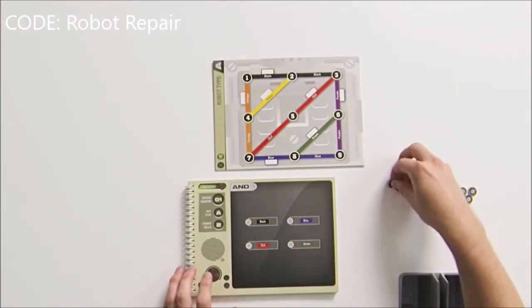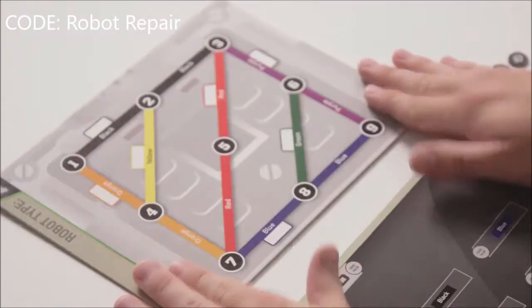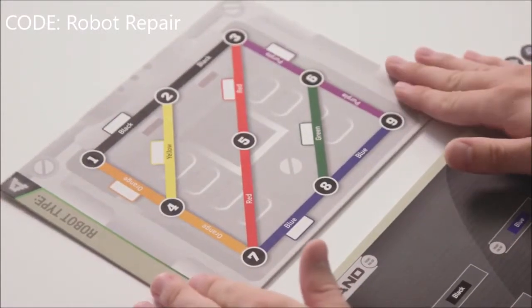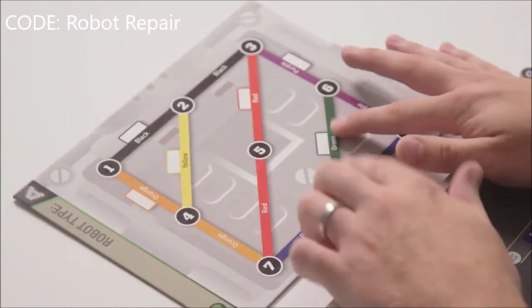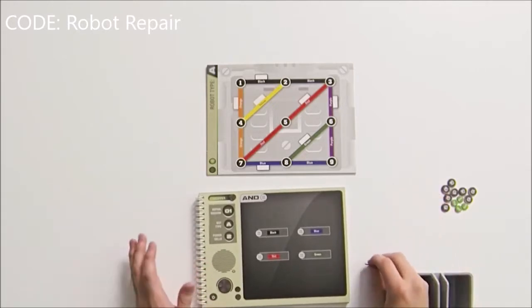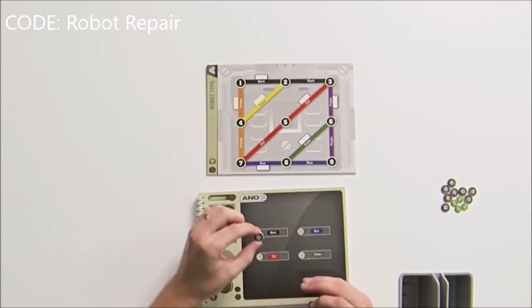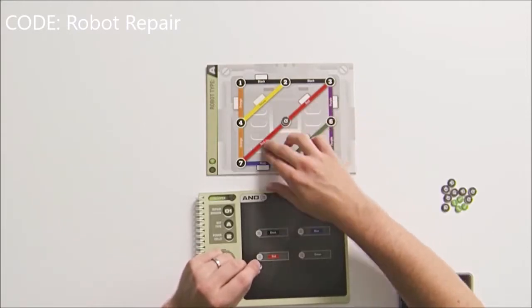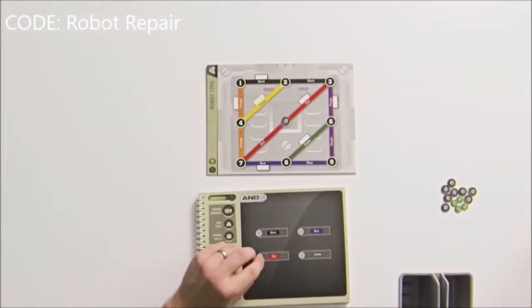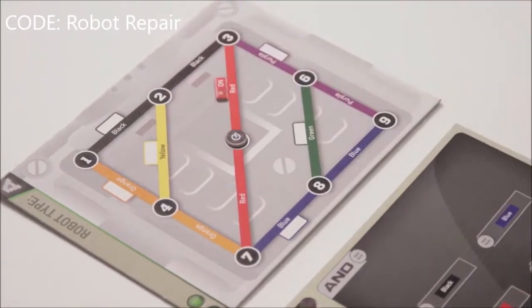Now the way that this game works is you're basically trying to repair a robot's brain. The game board represents the robot's brain. On this board is a circuit board with nodes and colored wires. In order to fix the robot's brain, we have to use our power cells to turn on the right wires. Now let's say we put a power cell on number five. This node is touching only the red wire, which means we would turn on the red wire. We can mark that for ourselves by putting one of our on tokens there.